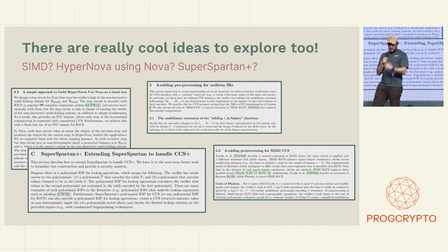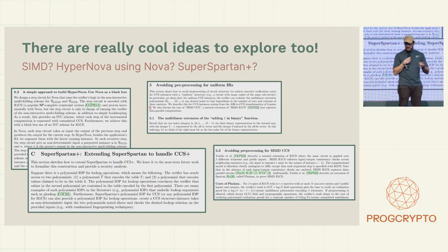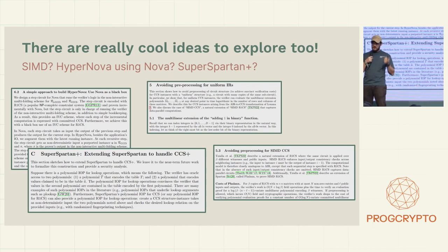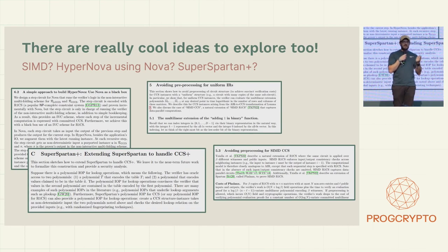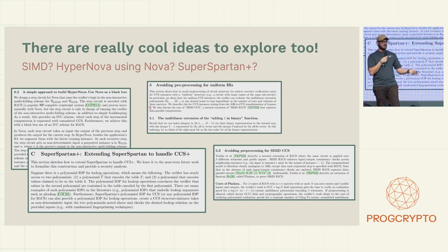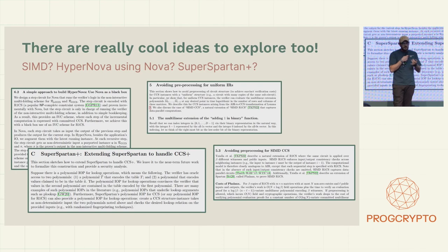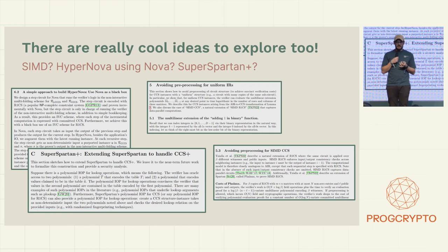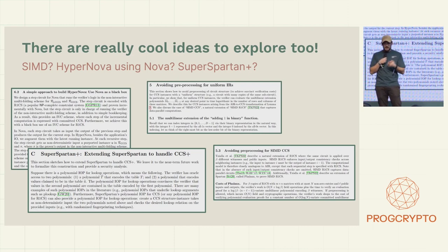Although we had SIMD Hypernova built on top of Nova as a black box, Super Spartan Plus, lots of crazy ideas in the paper — we were still missing a really efficient and good lookup argument. We needed confidence that we could build most of the circuits we use now on top of it, because if you've seen how circuits are written in Plonkish, you abuse lookups pretty much always, and you cannot afford something that doesn't support lookups if you want to write state-of-the-art circuits.